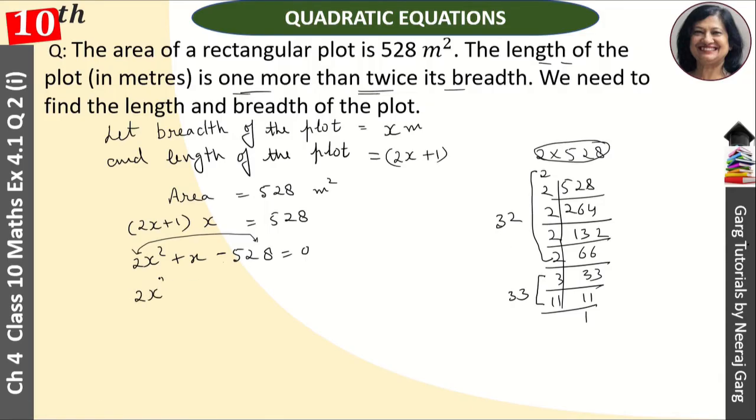Here we will write the factors: 2x² plus 33x minus 32x minus 528 equals 0.